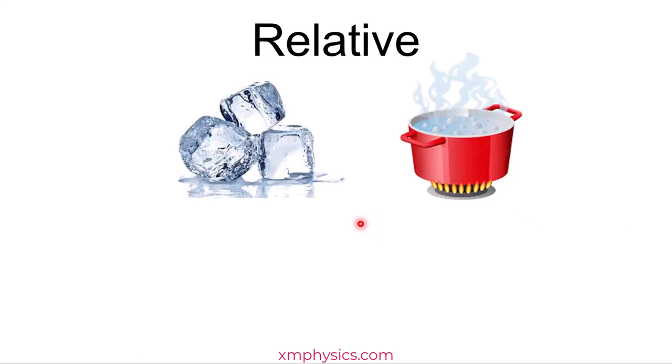The second problem with the centigrade scale is that it's a relative scale. It does not report an absolute temperature. It only reports whether you are colder or hotter compared to ice or steam.